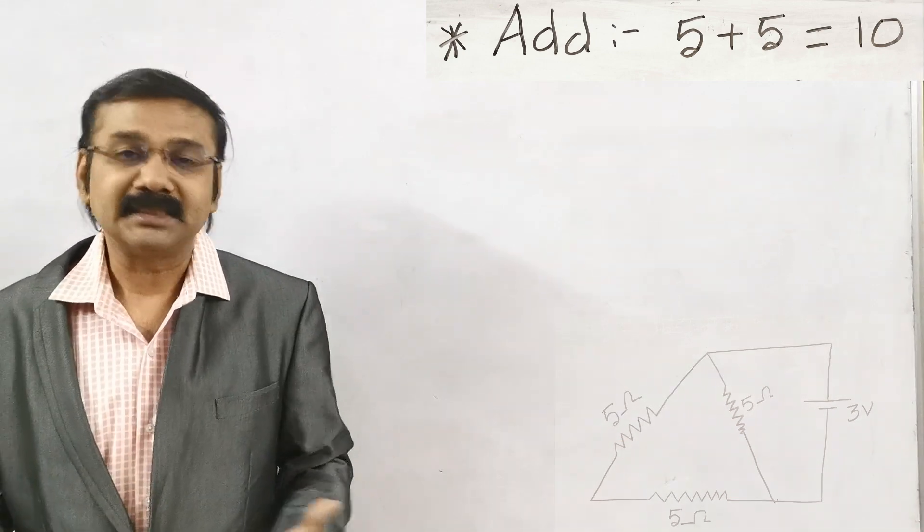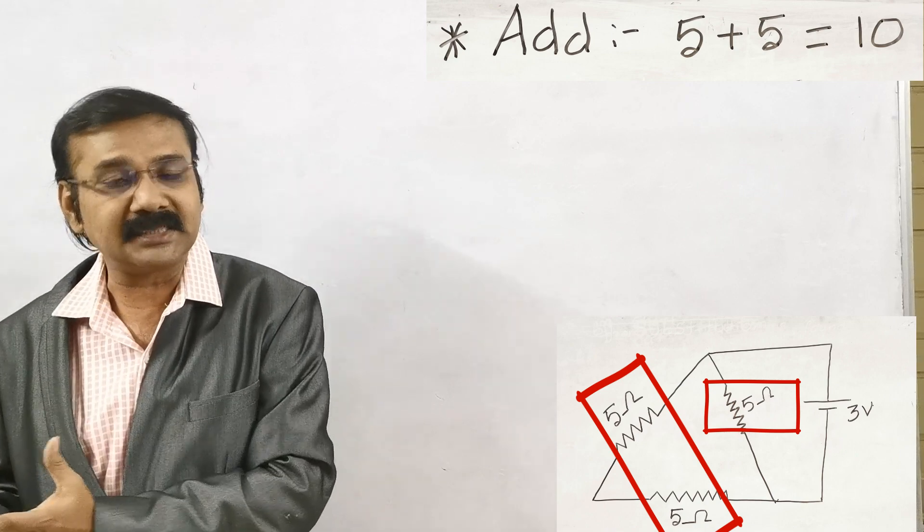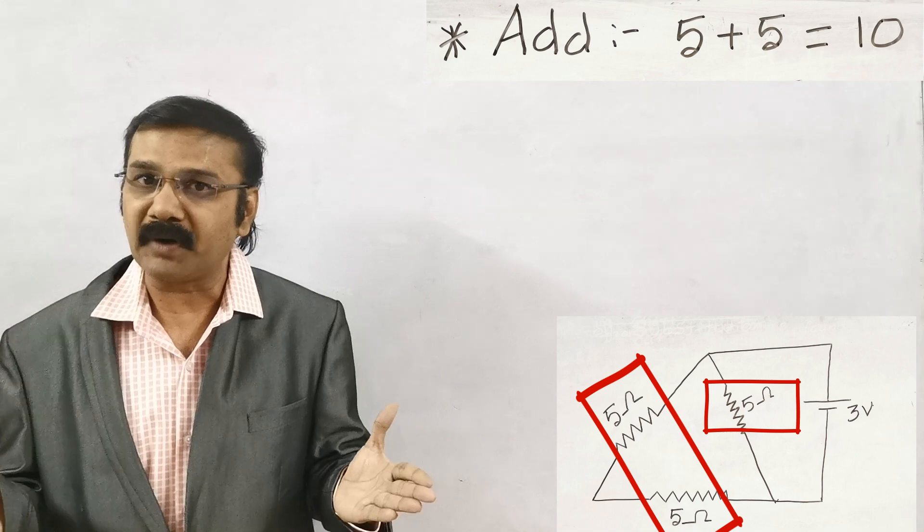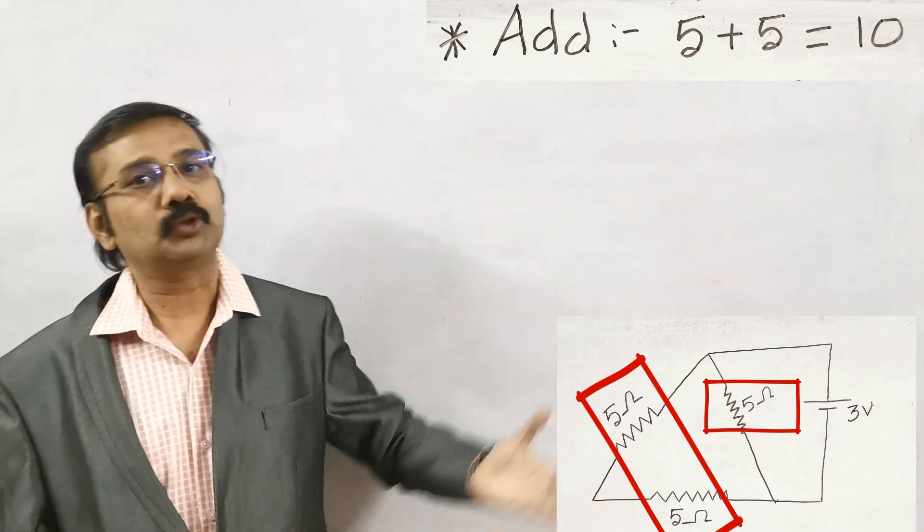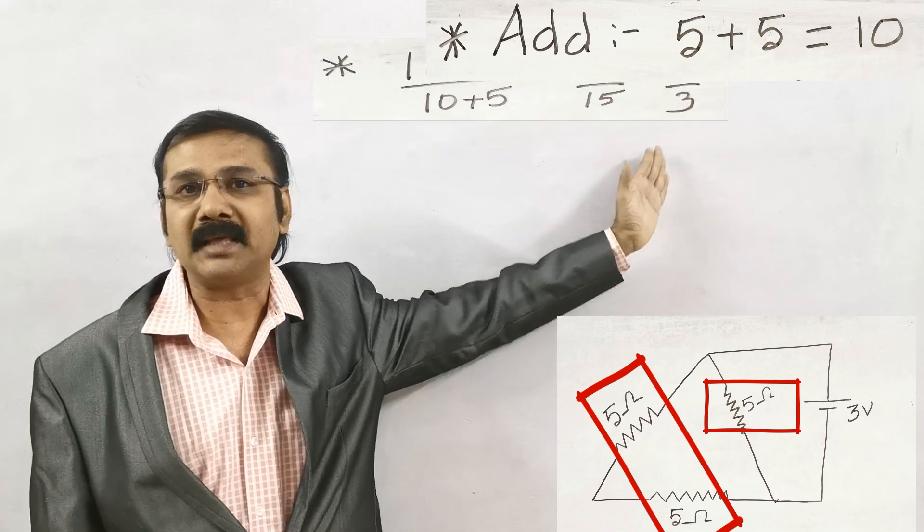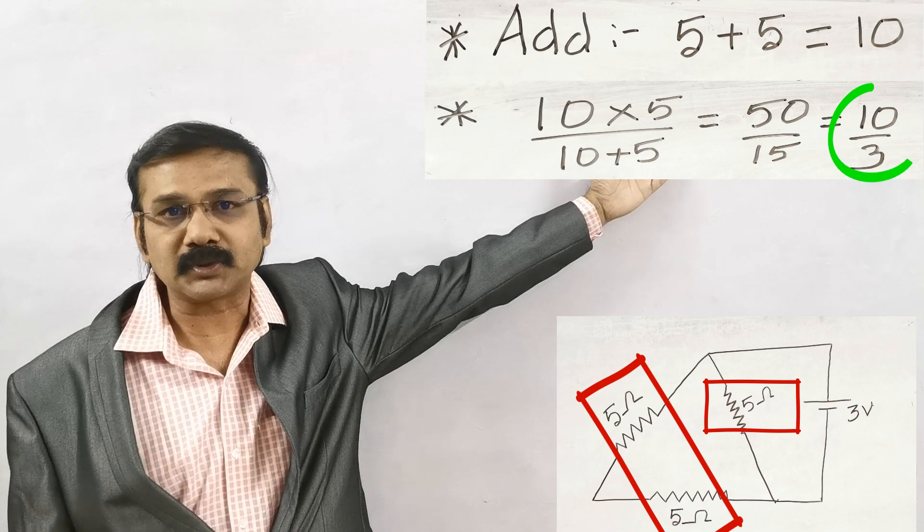In the second step, since the 10 ohms resistance and other 5 ohms resistance are connected in parallel, you have to use the formula R1 R2 divided by R1 plus R2. So following the formula we can do 10 into 5 by 10 plus 5, which is 50 by 15, and if you simplify you get 10 by 3 ohms.